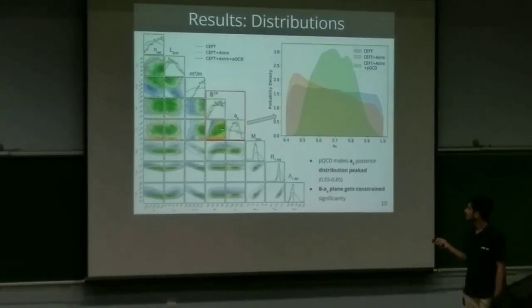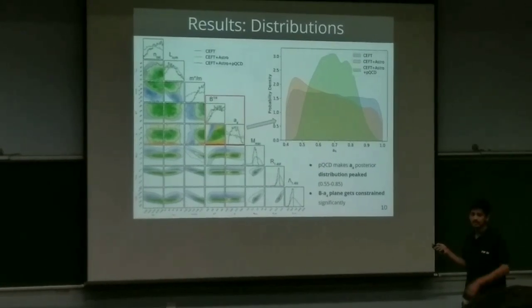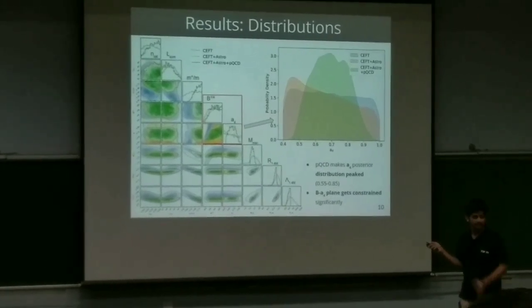And you also see that B-a4 space if we see it, is well restricted when we add all the three constraints.